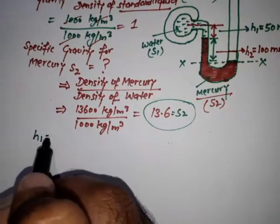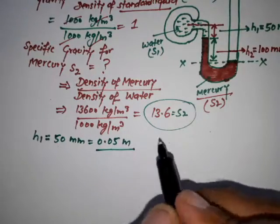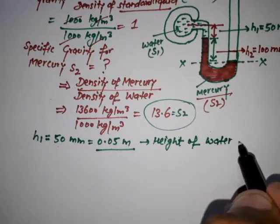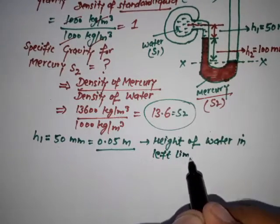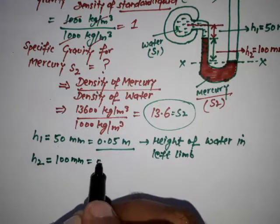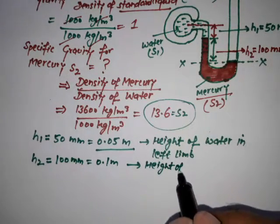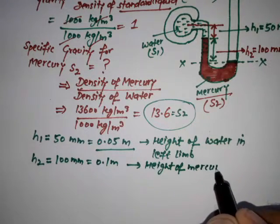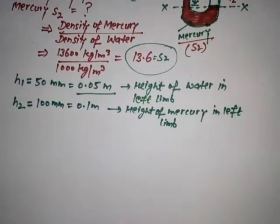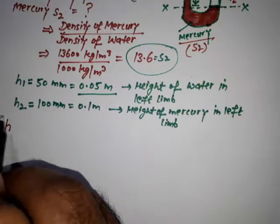Now we write the given values: h1 equals 50 mm, that is 0.05 m — this is the height of water in the left limb. h2 equals 100 mm, that is 0.1 m — this is the height of mercury in the left limb.